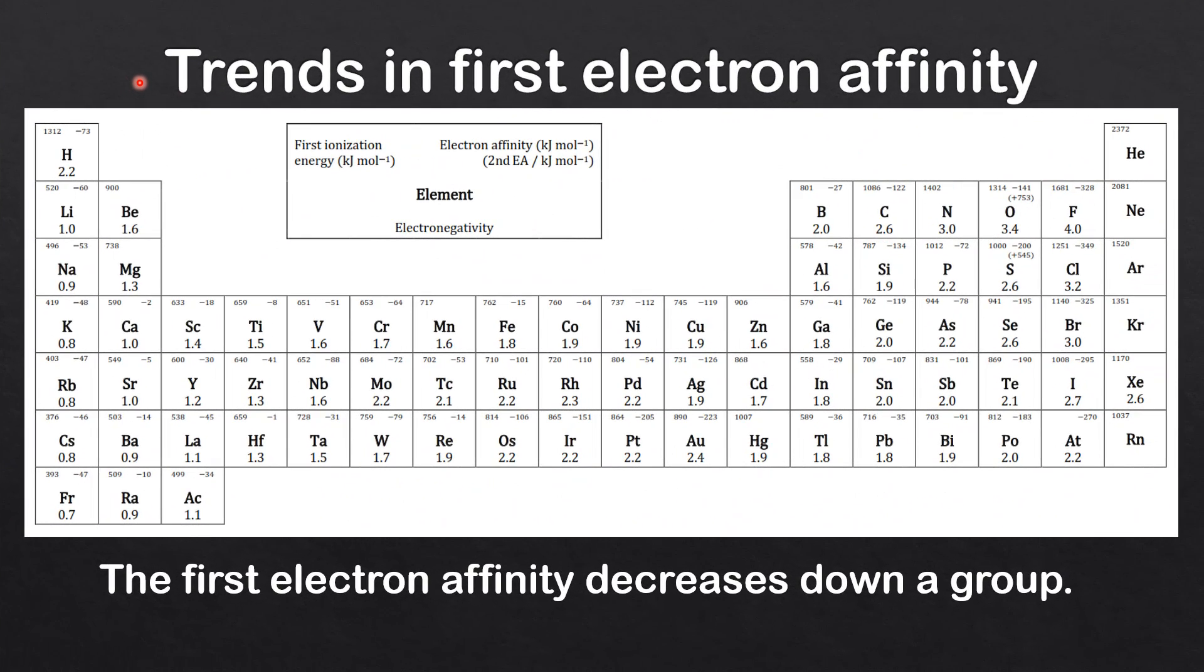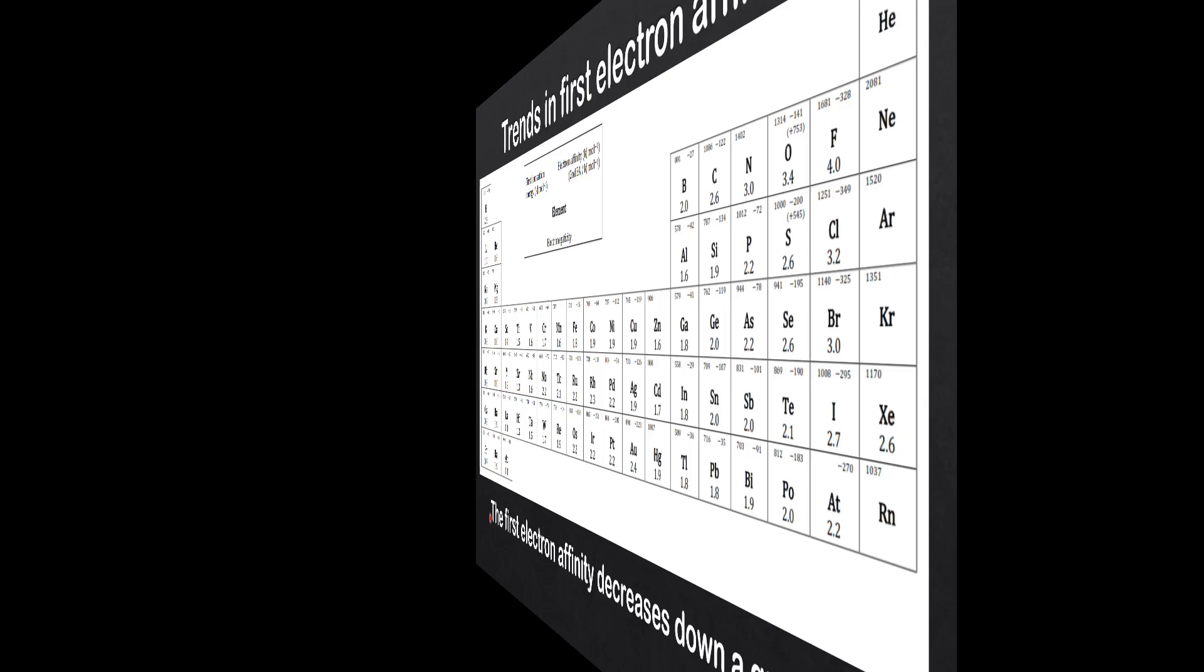Next we look at trends in the first electron affinity. The general trend is the first electron affinity decreases down a group.